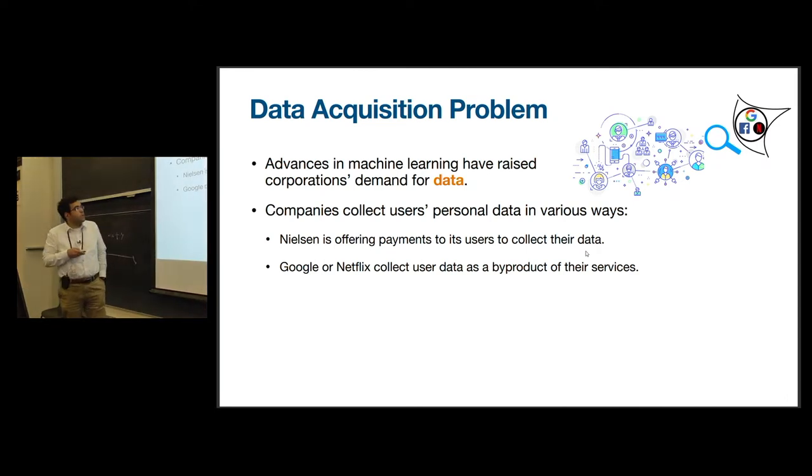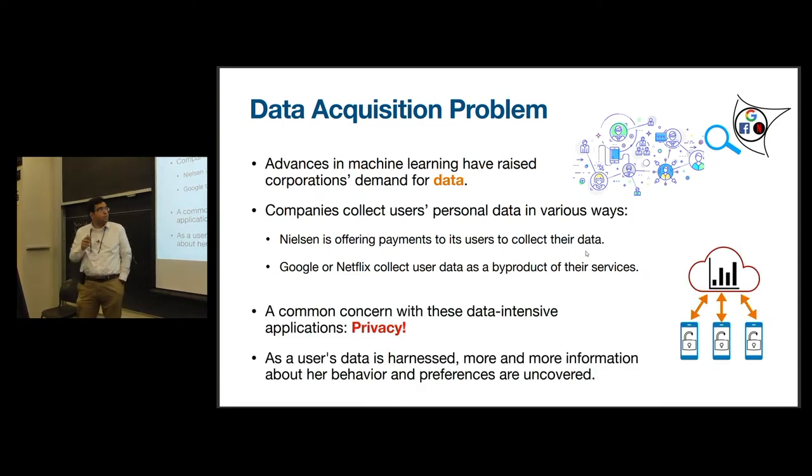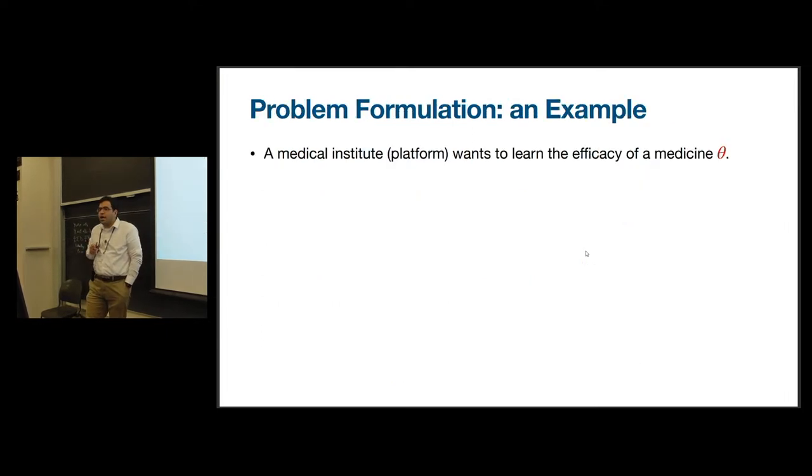The rise of machine learning applications has raised corporations' demand for data. These companies collect this needed data in various approaches. Some companies offer payments to users in exchange for their data, while many companies collect this needed data as a byproduct of their service. However, this rapid growth of data-driven applications has created a major concern about privacy. Let me elaborate our problem through an example. A medical institute or platform wants to learn the efficacy of a medicine theta.